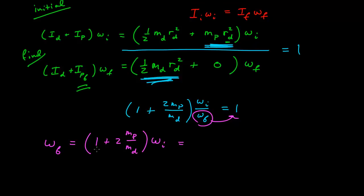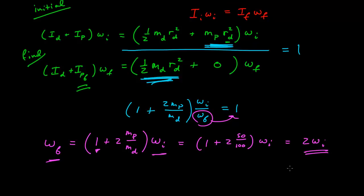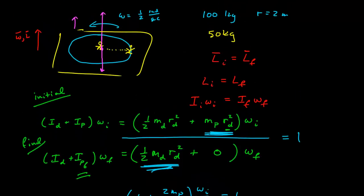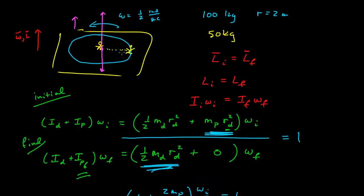These are all positive numbers and there is a one here, so our final angular velocity is going to be faster than our initial angular velocity. Plugging in numbers: two times mass of the person is 50, disk is 100, so one-half times two is one, plus one is two. That's equal to twice our initial angular velocity. Our initial angular velocity is one-half, so our final is equal to one radian per second — we doubled the angular velocity. The object is now spinning twice as fast as it was when the person was at the edge. By walking radially to the center, the entire system sped up to twice its angular velocity, because the total angular momentum of the system had to be conserved.